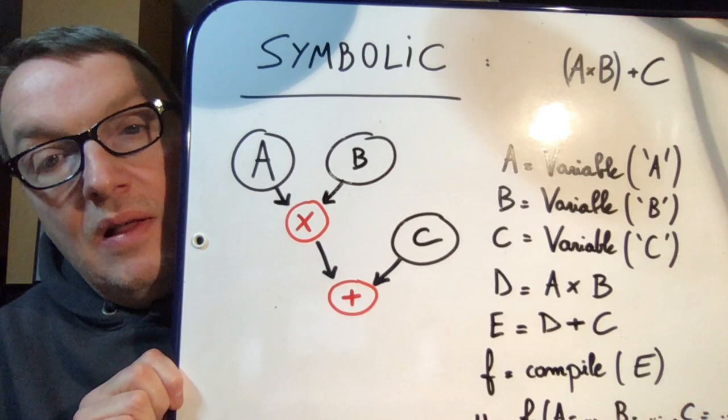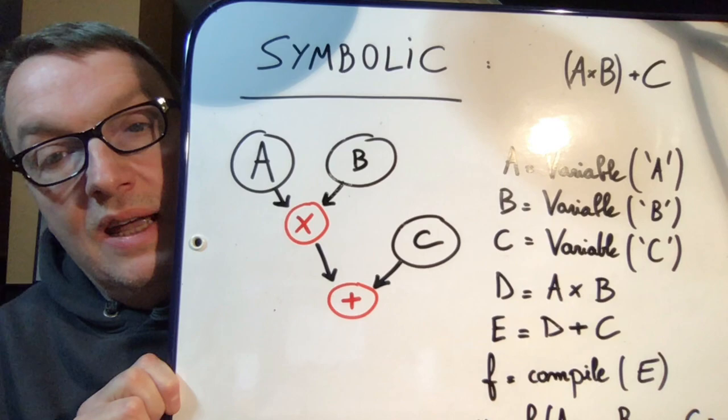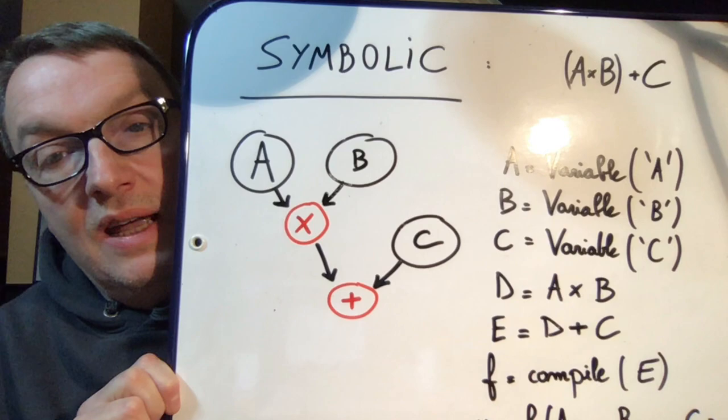This is just a very basic example, but this is the kind of stuff that graph compilation would do. The benefit is you end up using less memory and you run the graph faster, so you train faster. So that's symbolic programming—fast, efficient, difficult to debug, difficult to understand. That was TensorFlow 1.x.